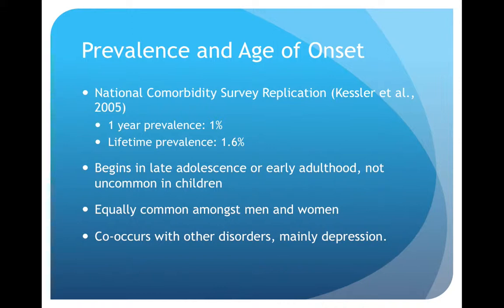According to the national comorbidities survey, OCD has a one-year prevalence of about 1% and a lifetime prevalence of 1.6%. It usually begins in late adolescence or early adulthood; however, it is not uncommon in children. Unlike other disorders, OCD is found equally common amongst men and women, and it co-occurs with other disorders, mainly depression.